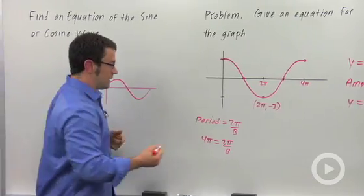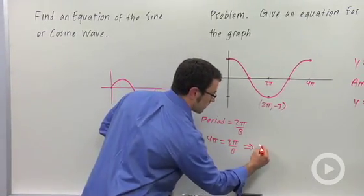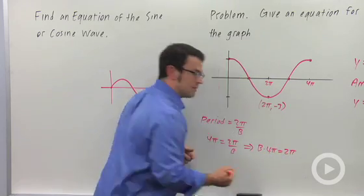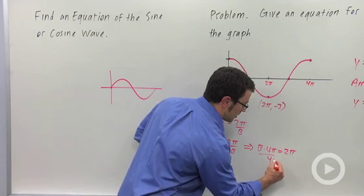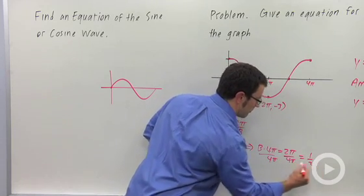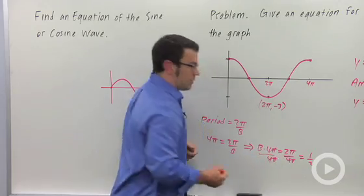And I can multiply both sides by b. And then divide by 4 pi. And it looks like I'm going to get 1 half. B is 1 half.